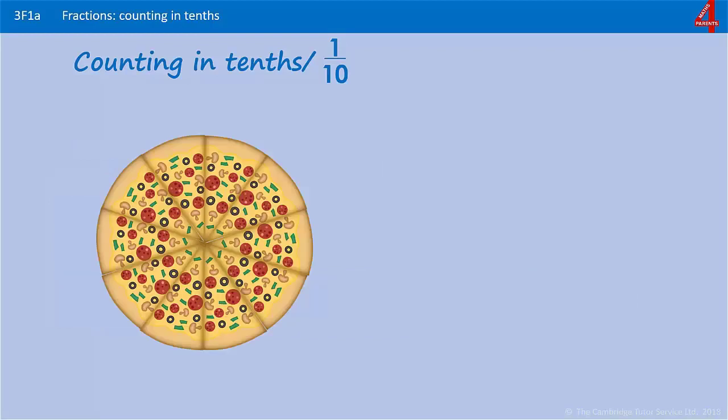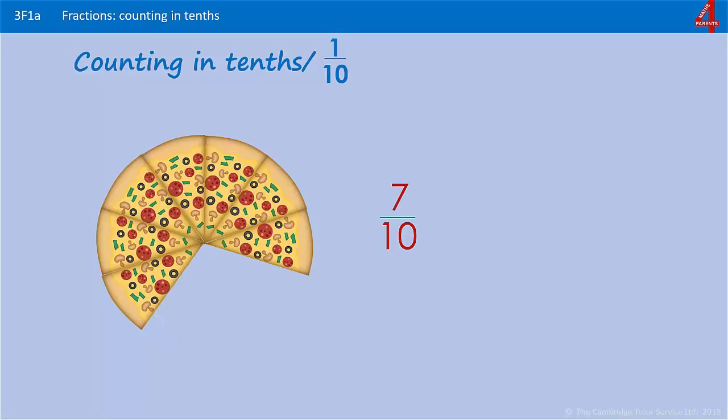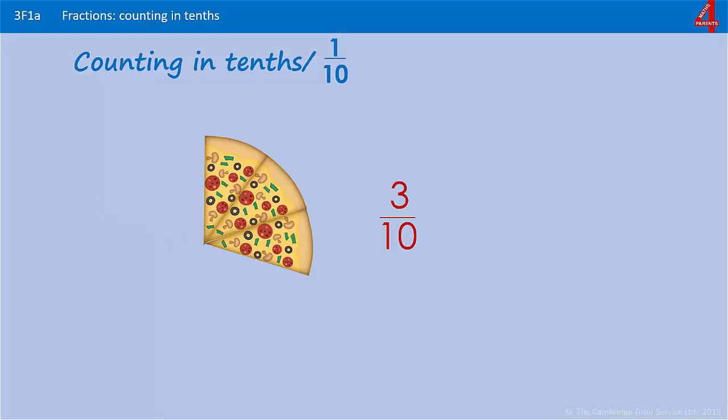Counting backwards in tenths: here we have a whole pizza that's been divided equally into ten pieces. Each piece is one tenth of the whole pizza. Currently we have ten tenths because the whole pizza is there. As soon as someone eats one of those tenths, we now have nine tenths. And if we continue to eat one tenth of the pizza, the numerator goes down once each time. And again, when we get to five tenths, you can see that you have half the pizza remaining. Keep eating the pizza until we have just one tenth remaining.